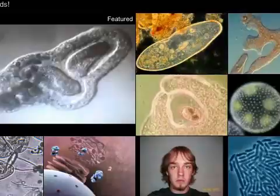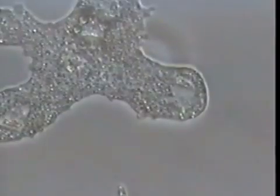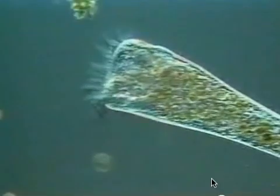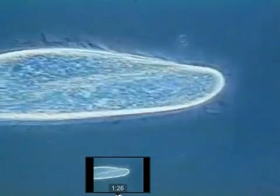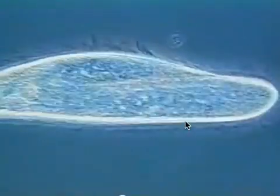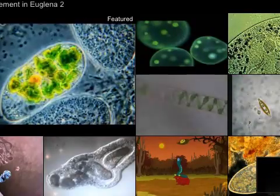So to recap: we've got amoeba, which use pseudopods; paramecium, which use cilia; and euglena, which use flagella.